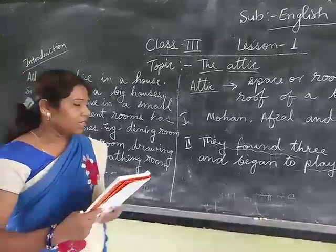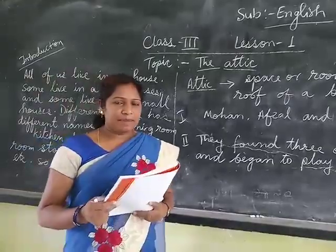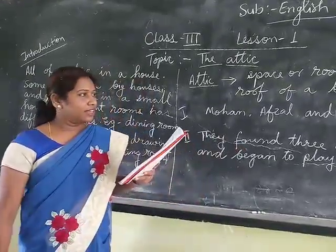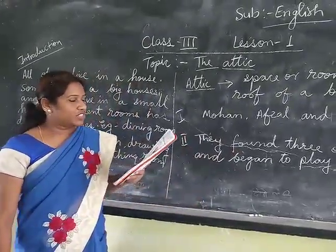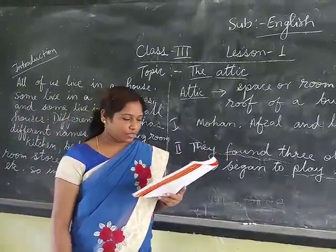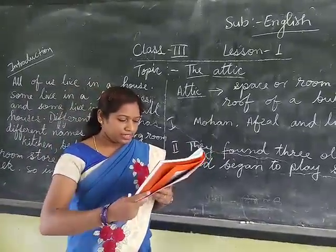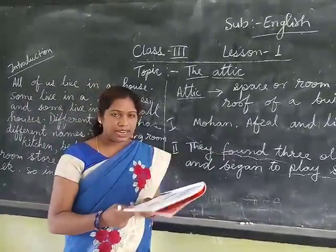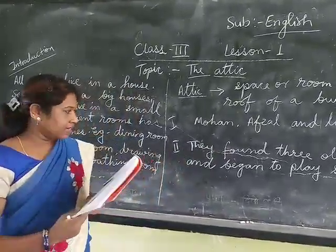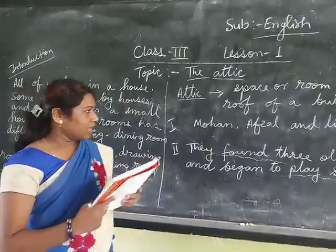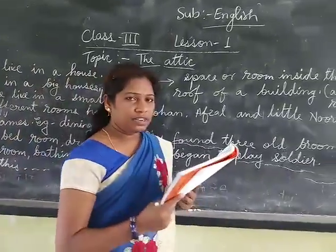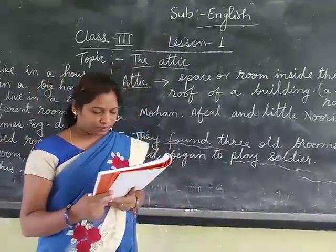In this chapter there is an attic where the children are quartered. In this chapter there are three characters: Mohan, Afzal, and little Nuri.